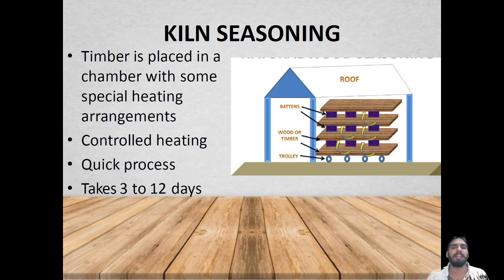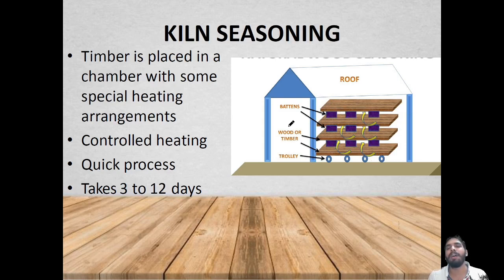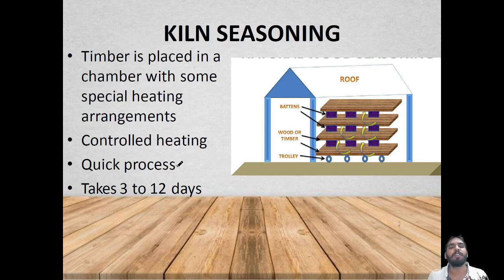Next comes kiln seasoning. The timber is placed in a chamber with special heating arrangements inside a roofed shed, and kept in the chamber by a trolley. Batons are provided in between two pieces of timber for spacing, and controlled heating is applied to remove moisture. Kiln seasoning is a quick process.